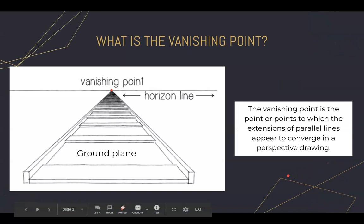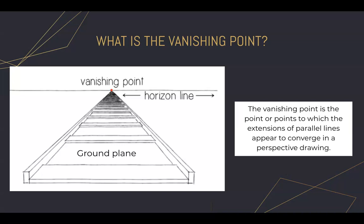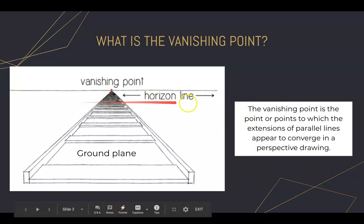Firstly, what is the Vanishing Point? The Vanishing Point is a point or points to which the extensions of parallel lines appear to converge in a perspective drawing. The Vanishing Point is an essential part of linear perspective. Some important parts of the Vanishing Point include the horizon line, which is at the viewer's eye level, and the ground plane, which is a plane that stretches back into infinity.